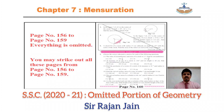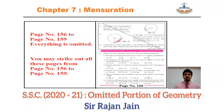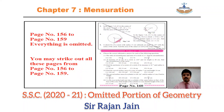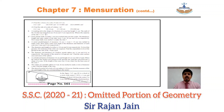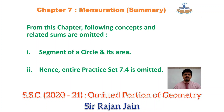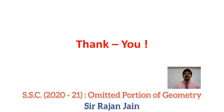Coming to the last chapter — mensuration — the omitted portion is towards the end of the chapter. Directly come to page number 156. From page number 156 till page number 159, you can omit everything — strike out pages 156, 157, 158, and 159. On page number 160, top of the page, since the entire practice set is omitted, strike out question numbers 3, 4, and 5 as well. On page number 161, the last question of your problem set — question number 10 — is omitted. Summary: the segment of a circle and its area is the omitted concept, and hence entire practice set 7.4 is omitted.